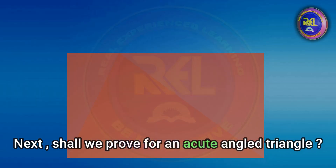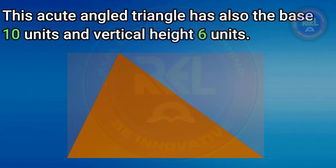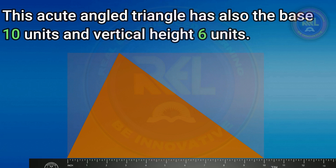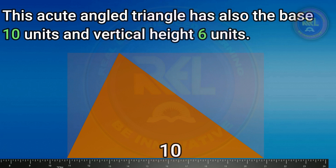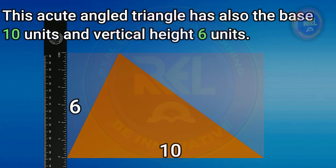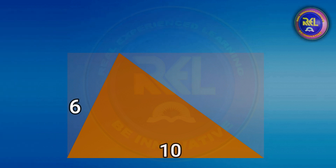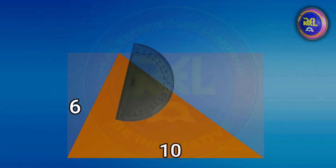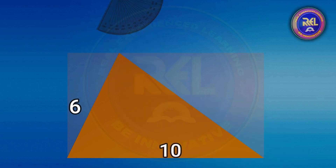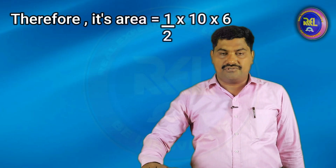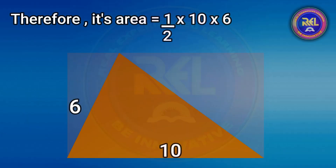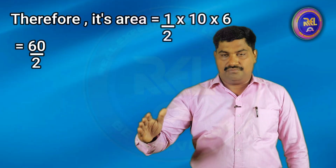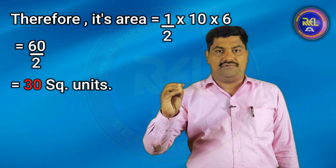Next, shall we prove for an acute angle triangle? This acute angle triangle also has base 10 units and vertical height 6 units. Therefore its area is also equal to half into 10 into 6, equal to 60 by 2, equal to 30 square units.